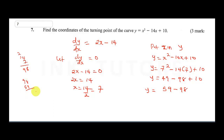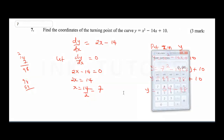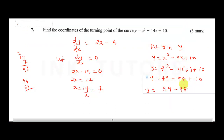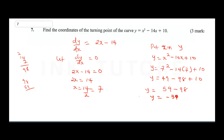Using a calculator: 59 minus 98 gives us negative 39. So y equals negative 39, and our turning point coordinate is (7, −39).